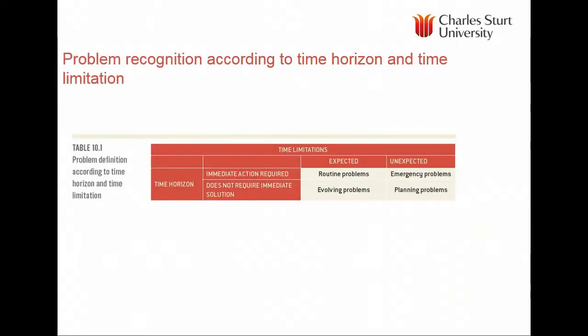As shown in table 10.1, the time horizon and time limitation also influence our decision making. Sometimes we make a decision on an emergency — you cut your finger and need a band-aid, or you have a headache and need a Panadol. Routine decisions are things like buying more sugar, milk, or breakfast cereal. Evolving decisions involve financial security or education. Then there are unexpected decisions where we need to do some planning, for example health insurance.